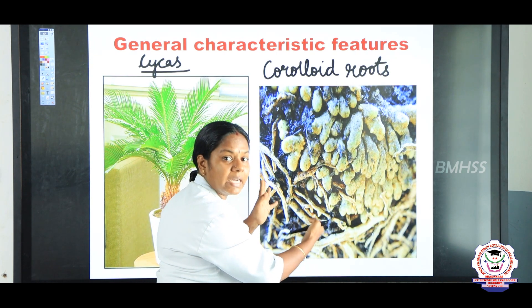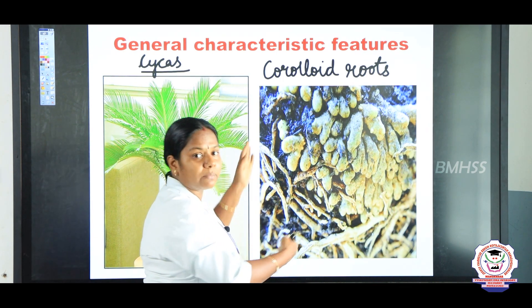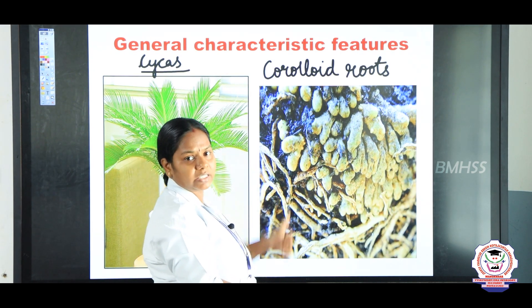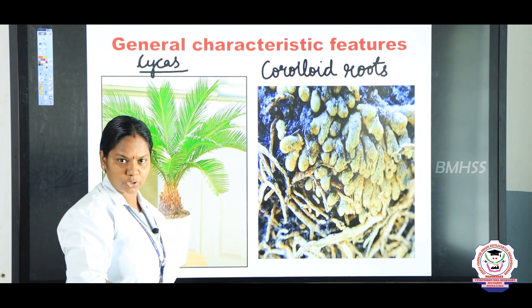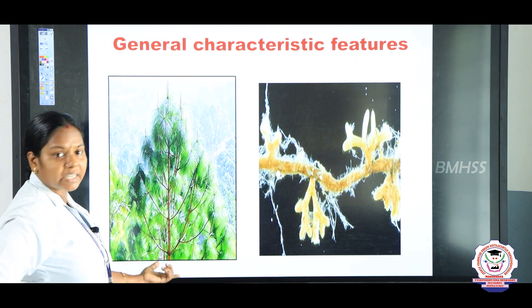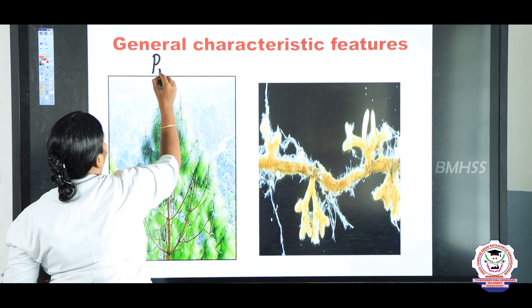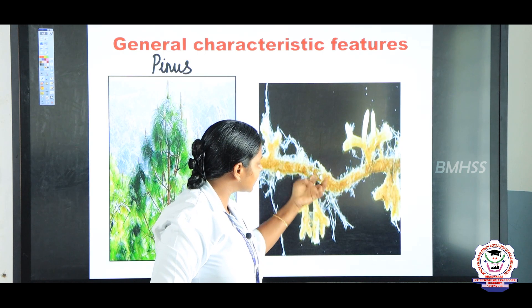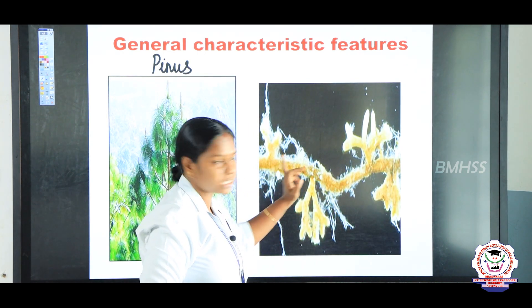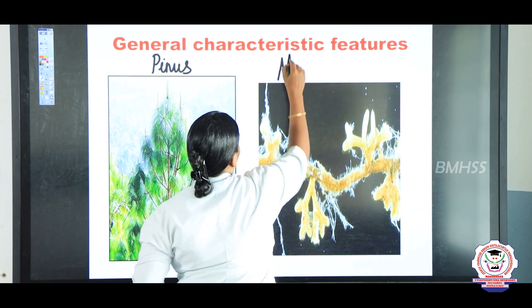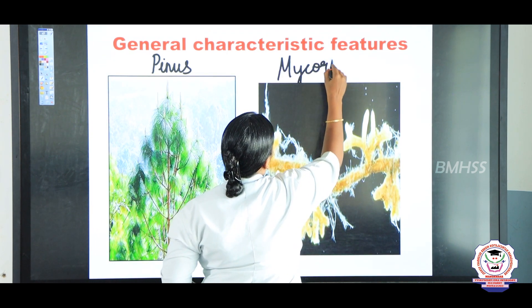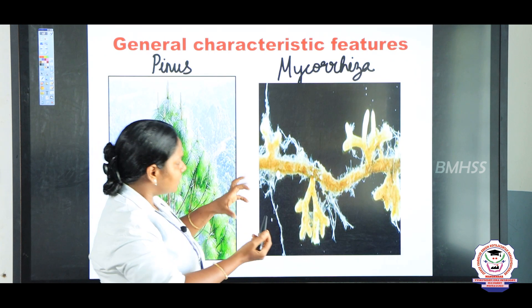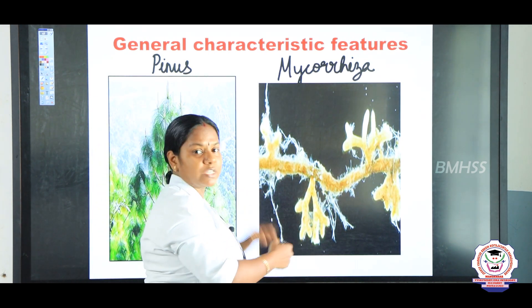For example, the cyanobacteria gets shelter from the coralloid roots, and likewise the cyanobacteria helps in fixing nitrogen to the coralloid roots — it is a symbiotic association. Another example is Pinus. You can see some white thread-like fungal structures on the roots of Pinus — we call this mycorrhizae. This is also a symbiotic association where the root is benefited from the mycorrhizae, and the mycorrhizae receives some benefits from the plant.